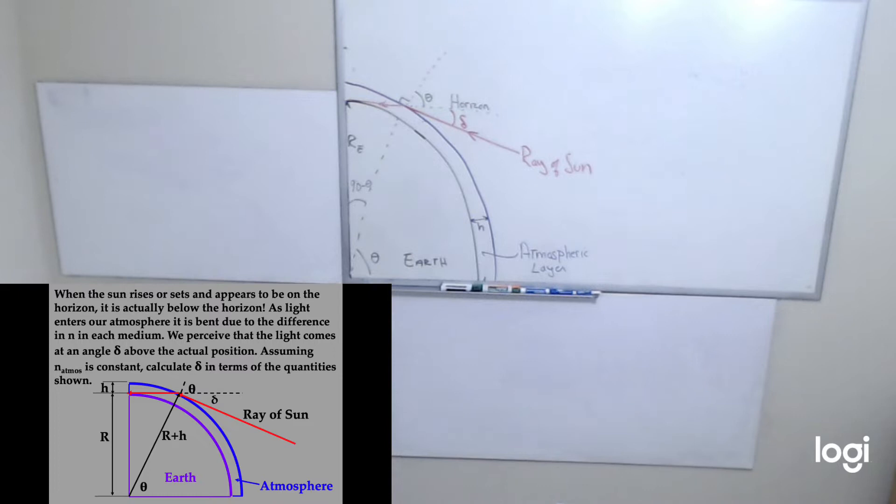So when it rises or sets, the sun appears to be on the horizon, but actually it is below the horizon. As the light enters our atmosphere, it is bent due to the difference in the index of refraction between our atmosphere and the index of refraction outside our atmosphere, which is essentially 1.